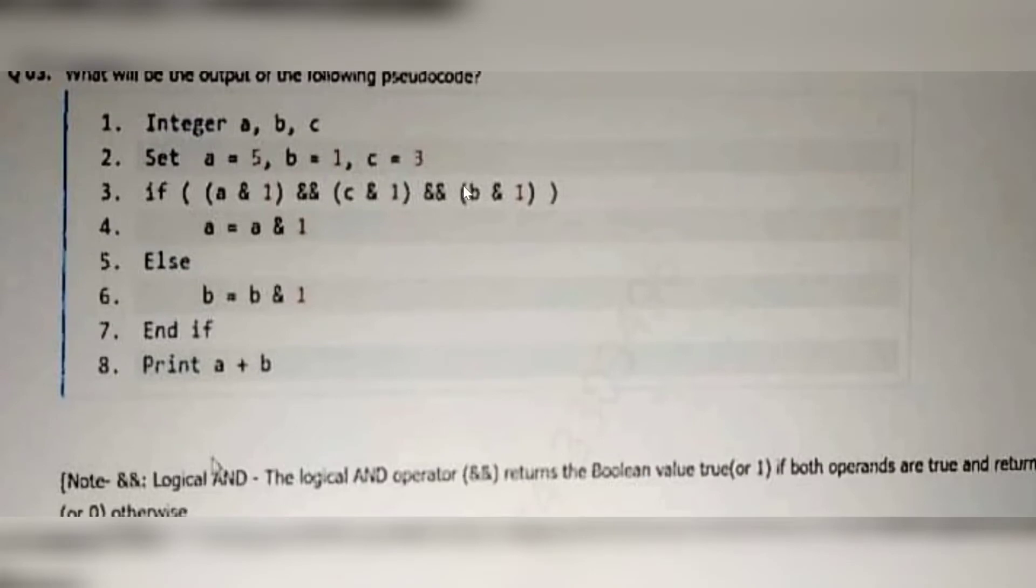Then next question integer A, B, C equal to 5, B equal to 1 and C is equal to 3. So if A and 1 means first we will calculate A value is 5, 5 and 1 means 5 decimal binary equivalent is 00101.